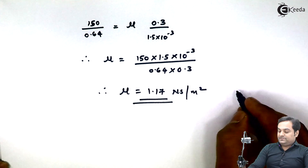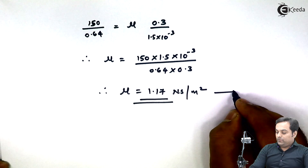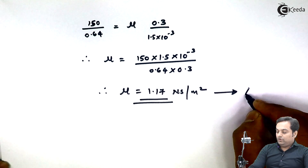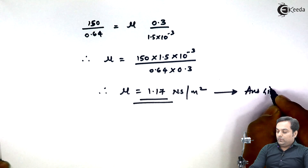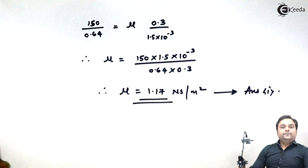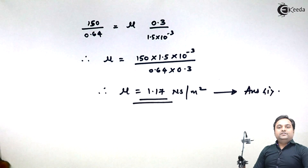So the dynamic viscosity of oil is 1.17 N·s/m². With this we complete the problem.